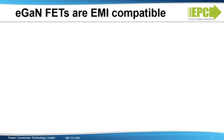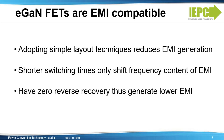In summary, eGaN FETs and ICs are EMI compatible. By adopting simple layout techniques, one can ensure significant reduction in EMI generation at zero added cost. The higher switching slew rates only result in a shift in spectral content and do not increase EMI energy. At higher frequencies, EMI reduction techniques are more effective, ensuring lower cost to implement. Finally, eGaN FETs and ICs have zero reverse recovery and thus inherently generate less EMI energy in hard switching converters. In the next slides, we will hear from Würth Electronic on the impact of inductor selection and design for lowest EMI generation and propagation.